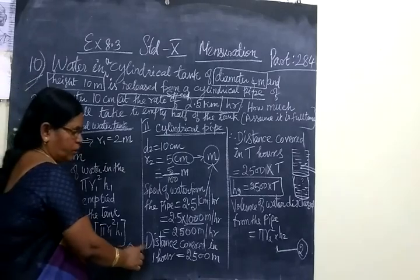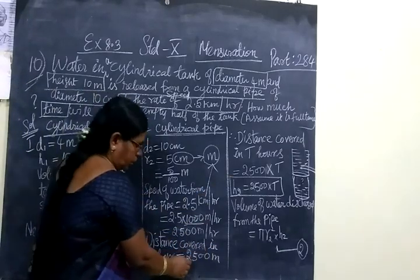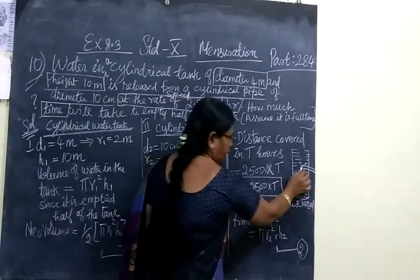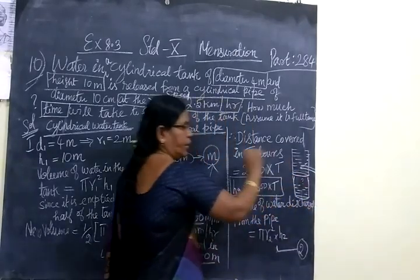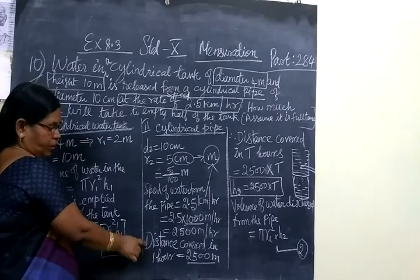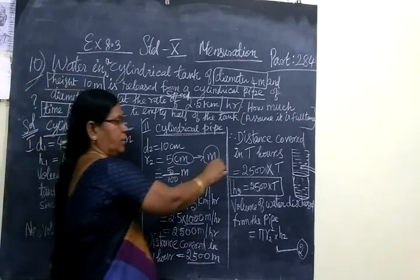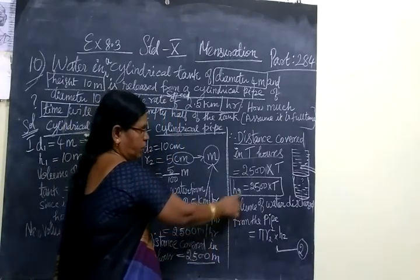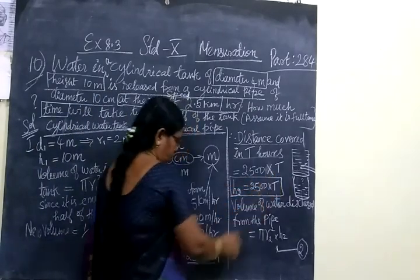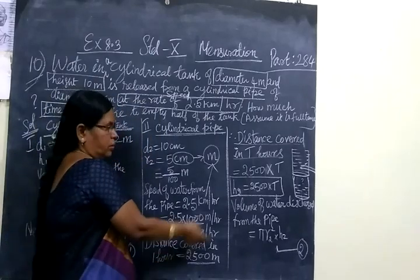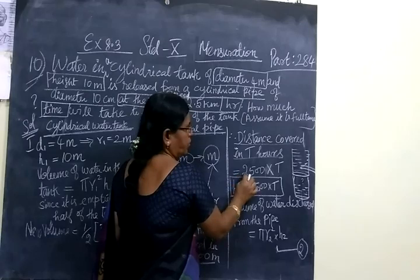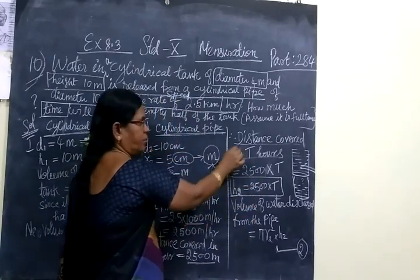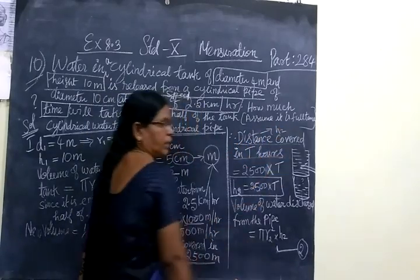Distance covered in some T hours equals 2,500 into T. Distance covered in 1 hour equals this one. Distance covered in some T hours equals 2,500 into T. This is nothing but H2. Distance is H2.